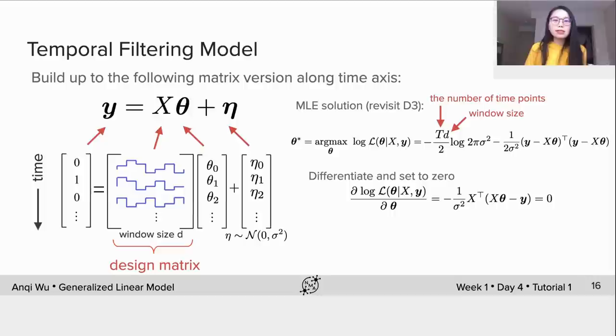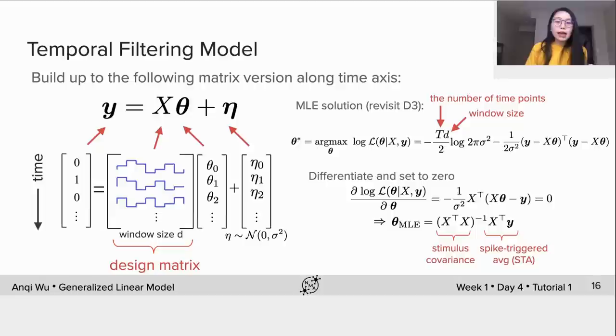Again, this is a revisit of derivation on day 3, thus I'm not expanding the derivation here. We can still differentiate the log likelihood function and set it to be 0. We obtain the final closed form solution for θ. Again, as stated on day 3, the MSE and MLE solutions are the same when the noise is Gaussian.